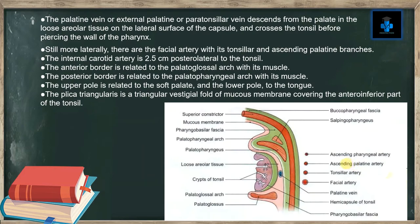The palatine vein descends from the palate in the loose areolar tissue on the lateral surface of the capsule and crosses the tonsil before piercing the wall of the pharynx. Still more laterally, we can appreciate the facial artery with its tonsillar and ascending palatine branches. The internal carotid artery is 2.5 centimeters posterolateral to the tonsil.